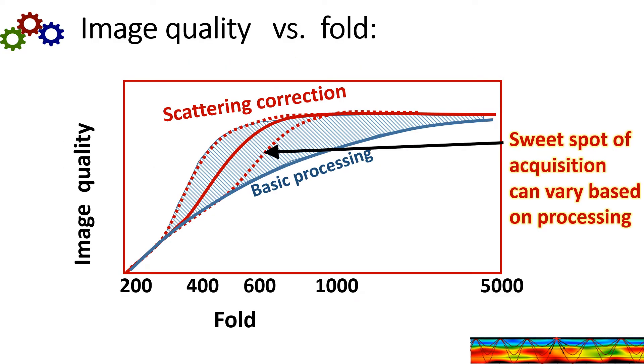So this is a conceptual display of image quality versus fold. If you perform basic processing, that's the blue line, you can see a gradual increase in image quality as a function of fold. And the problem here is that you reach diminishing returns as you get to very high folds. But with the higher order scattering corrections, once you have enough folds to resolve the scattering and correct for it, you can significantly improve your image quality.